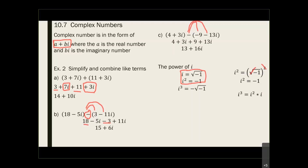Do you agree that i to the third is the same as i squared times i? Because i squared times i — i is basically i to the 1 power, so 2 plus 1 gives me 3. If i to the third equals i squared times i, then i squared is negative 1, and negative 1 times i gives negative i. And negative i — since i equals √(-1) — is the same as negative of the square root of negative 1.